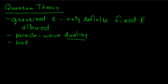Heisenberg said there's always some uncertainty in the position of a particle and its velocity. You can't know both position and velocity at the same time with infinite precision — you can't know them both exactly. You can know them both with some uncertainty, like 'it's around here and going about this fast, plus or minus something.' Heisenberg actually quantified how precisely you could know those two quantities.